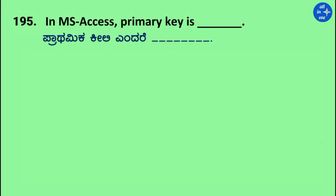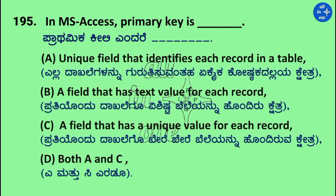Question: In MS Access, primary key is dash. Options: Unique field that identifies each record in a table; A field that has a text value for each record; A field that has a unique value for each record; Both A and C. Right answer is Both A and C.